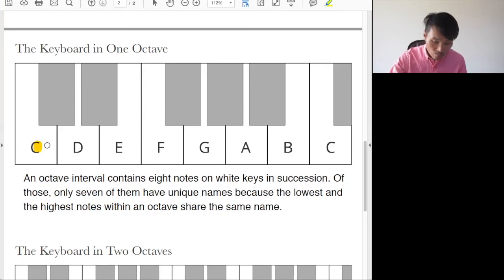Yes, so we have noted that the beginning and the end of an octave share the same name. In this case, C. And there are eight white keys in succession within an octave. So that means there are seven unique names assigned to white keys.